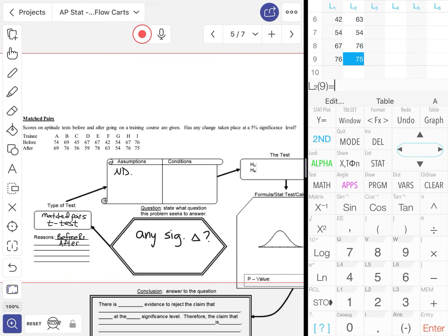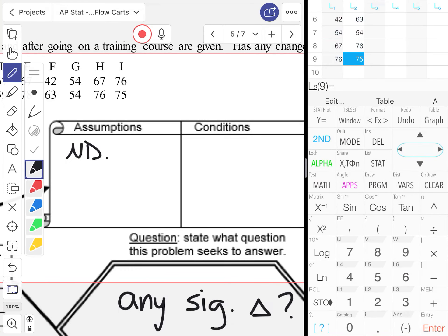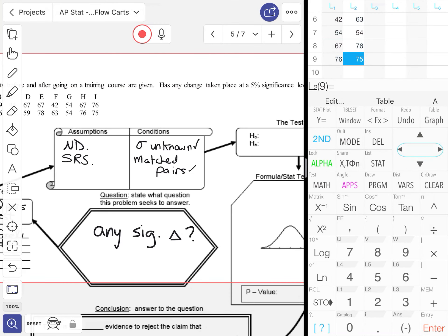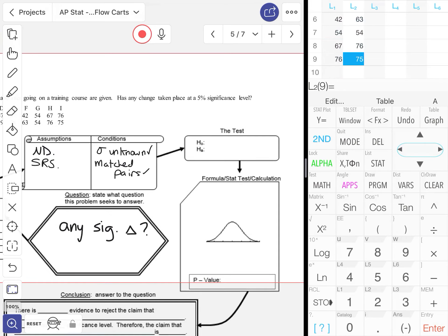Scores on aptitude tests before and after going on training doesn't say anything about randomization, so we have to assume that it's a simple random sample. We don't know what sigma is, and we do know that it's matched pairs. So we have two verifiable assumptions making those conditions, and we only have two that we have to actually assume. And if we're looking for a significant change, then we're looking for a difference between the two population means.